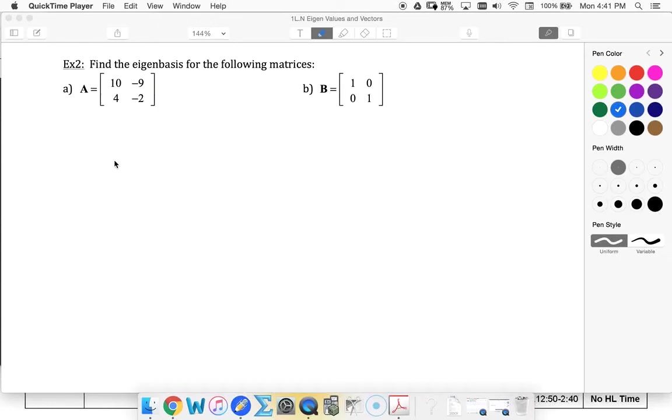Alright, we're going to look for the eigenbasis for the following matrices. So I'm going to start by finding my eigenvalues. I know that determinant of A minus lambda I has to be 0.